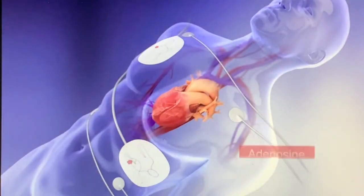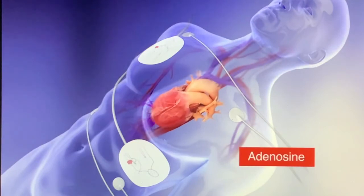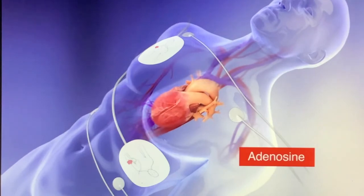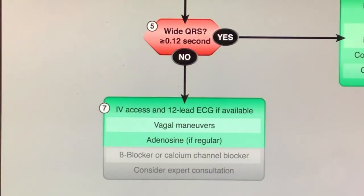Adenosine slows electrical conduction through the AV node and terminates approximately 90% of reentry tachyarrhythmias within two minutes. Although it doesn't terminate atrial flutter or atrial fibrillation, it will slow AV conduction, allowing for identification of flutter or fibrillation waves, thereby allowing confirmation of the underlying tachyarrhythmia. If the rhythm converts with adenosine, it's most likely reentry SVT. Observe for recurrence.